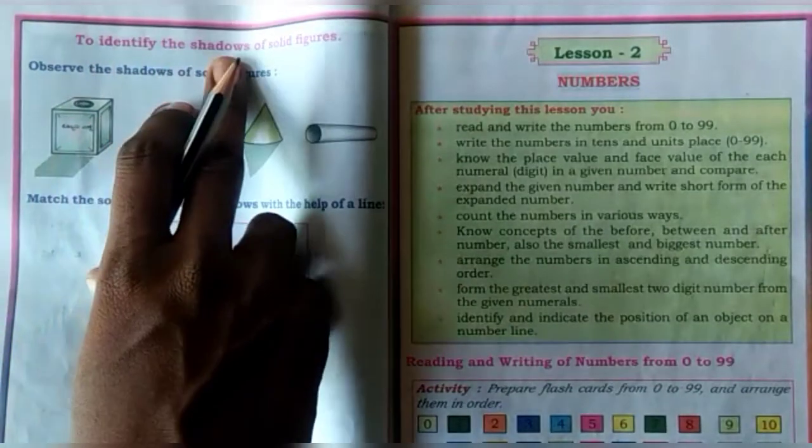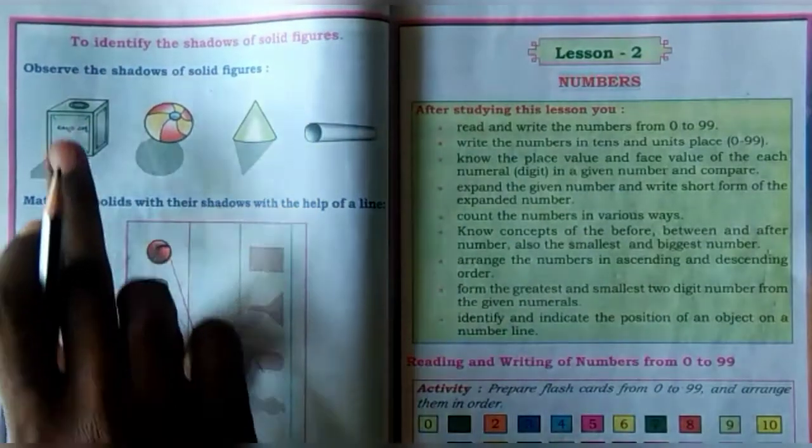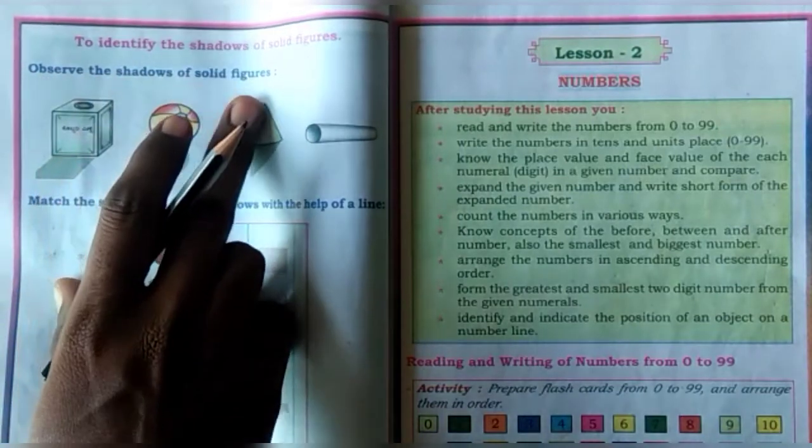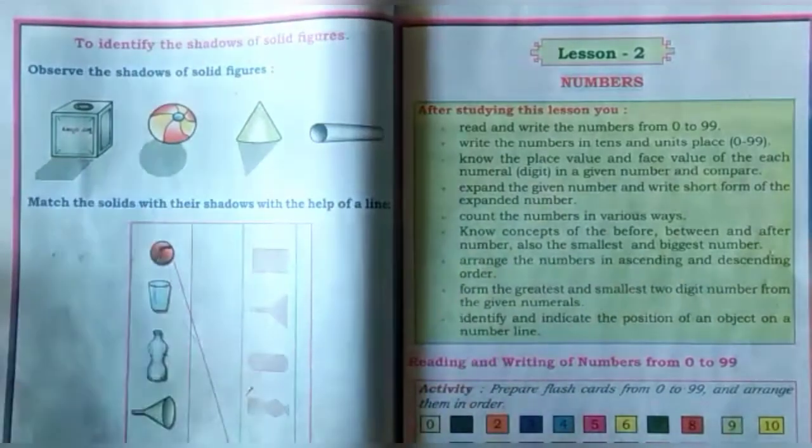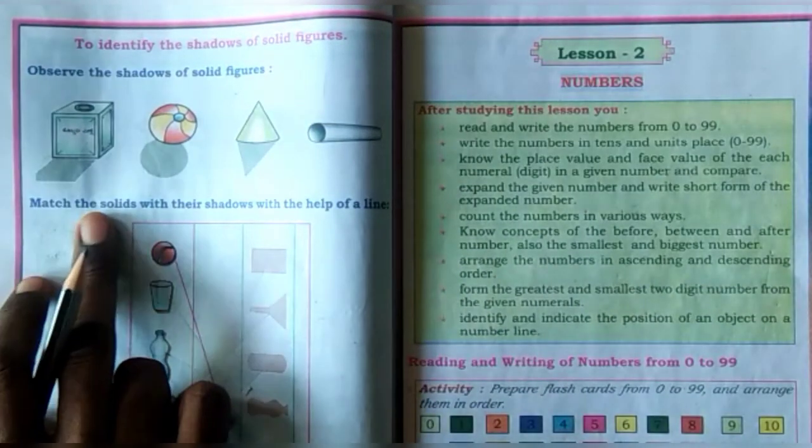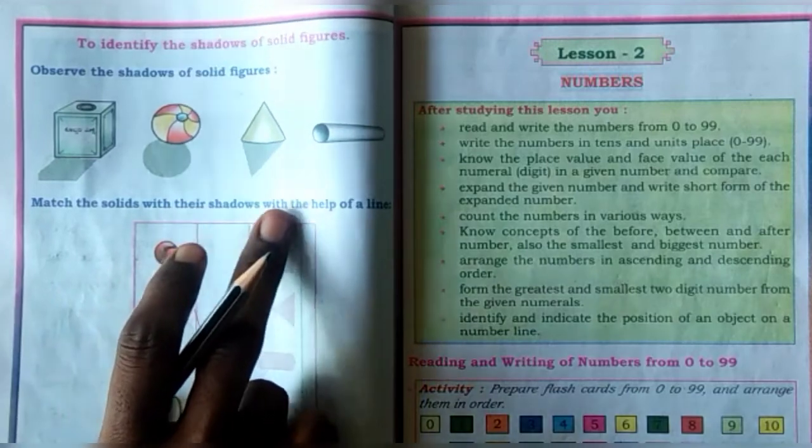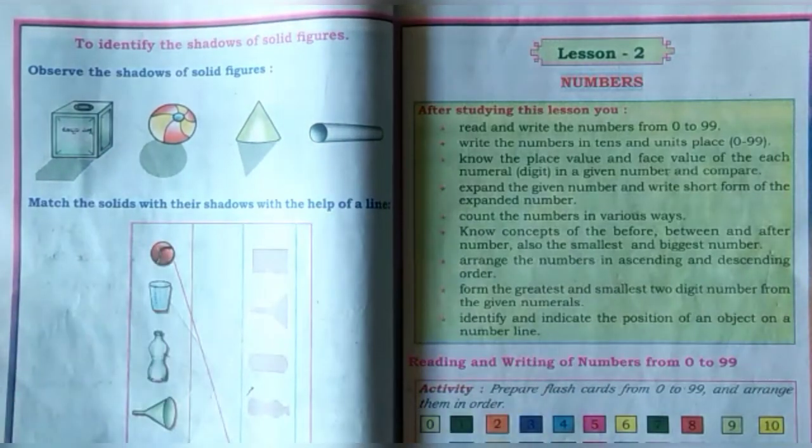Next, to identify the shadow of solid figures. Now you can observe the shadows of solid figures. Next, match the solids with their shadows with the help of a line.